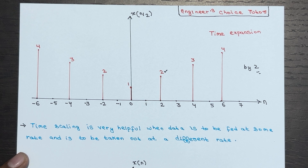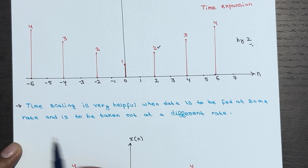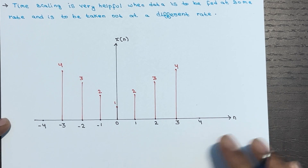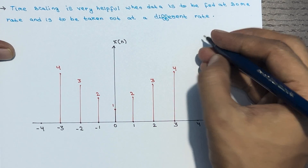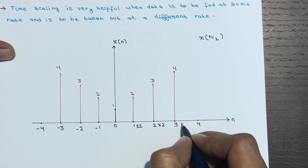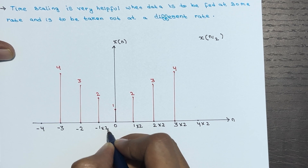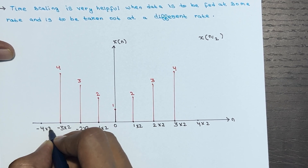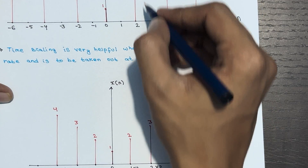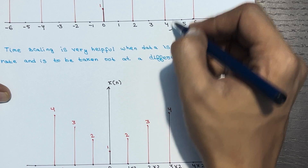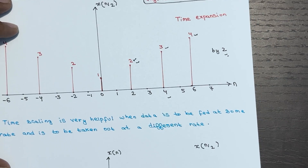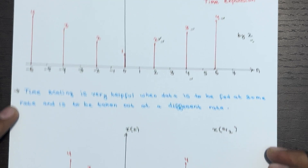Time scaling is very helpful when data is to be fed at some rate and taken out at a different rate. The shortcut way for X(n/2): instead of dividing, simply multiply each time instance by 2. So the value at n=1 appears at 2×1=2, the value at n=2 appears at 4, the value at n=3 appears at 6, and so on.